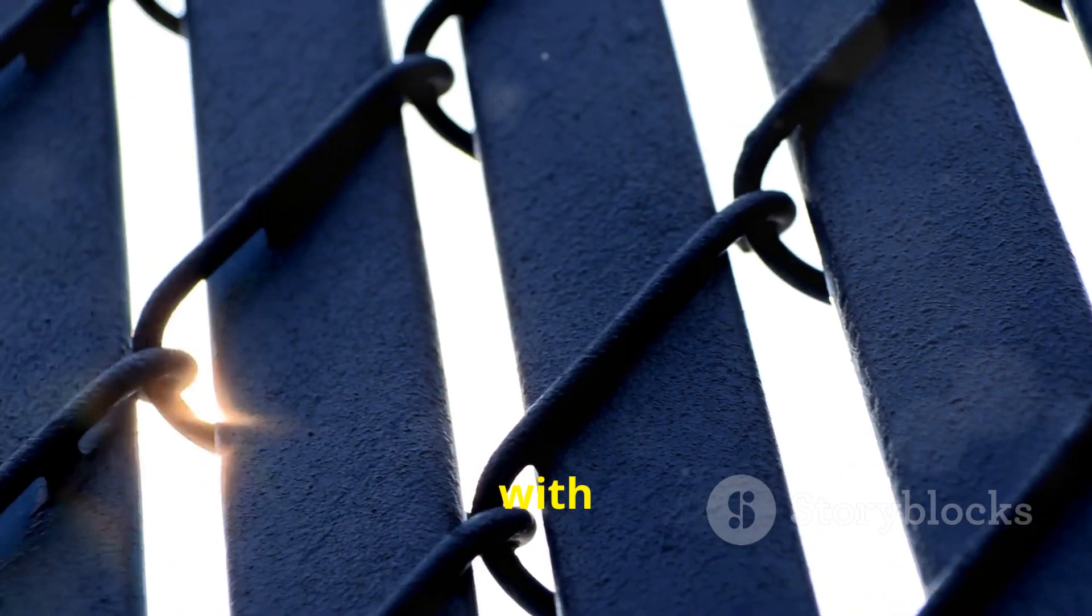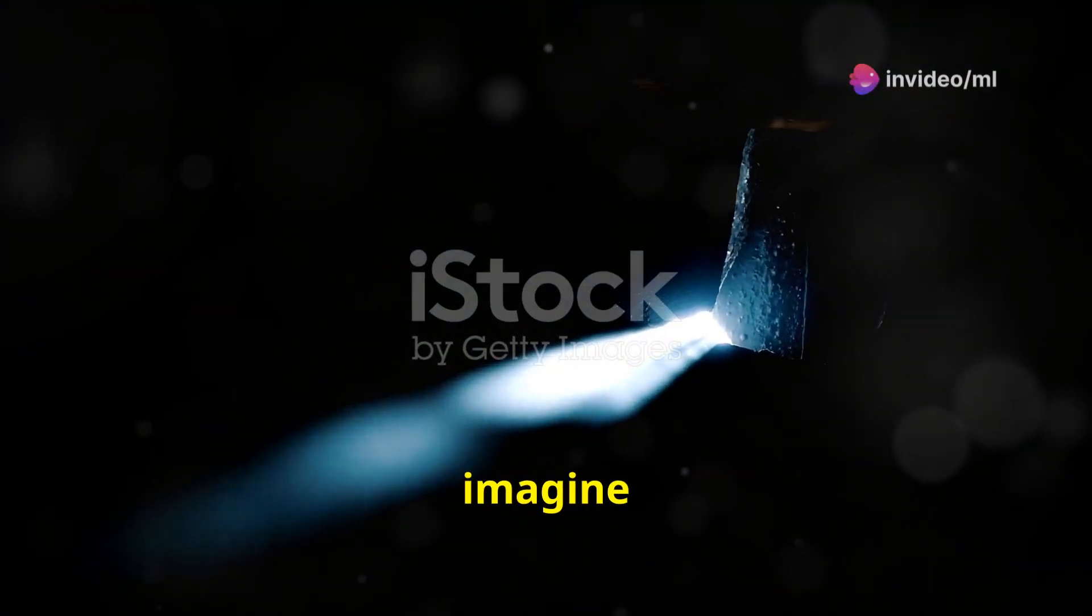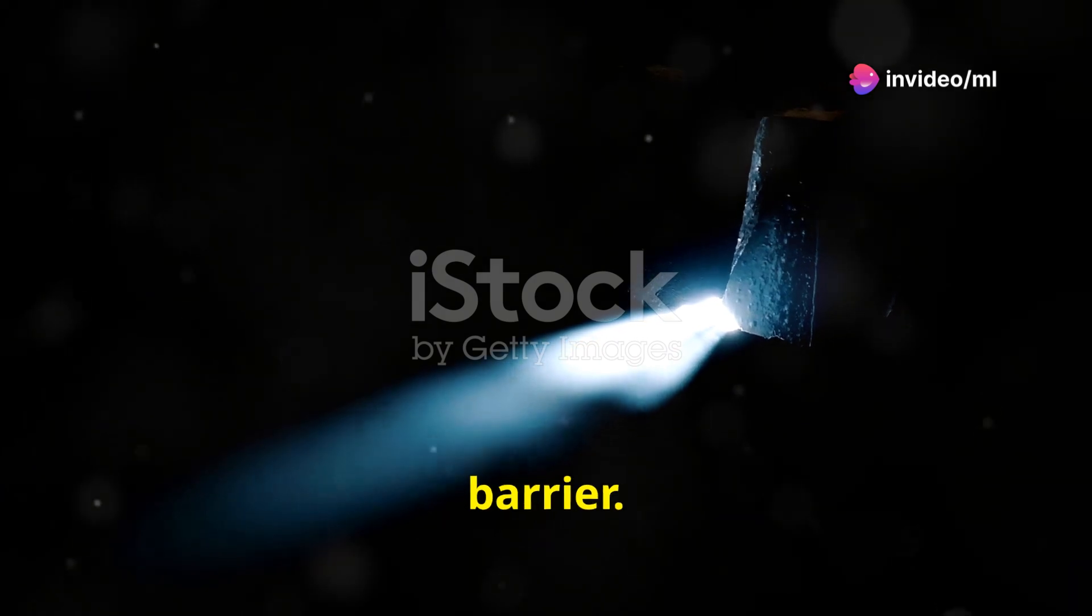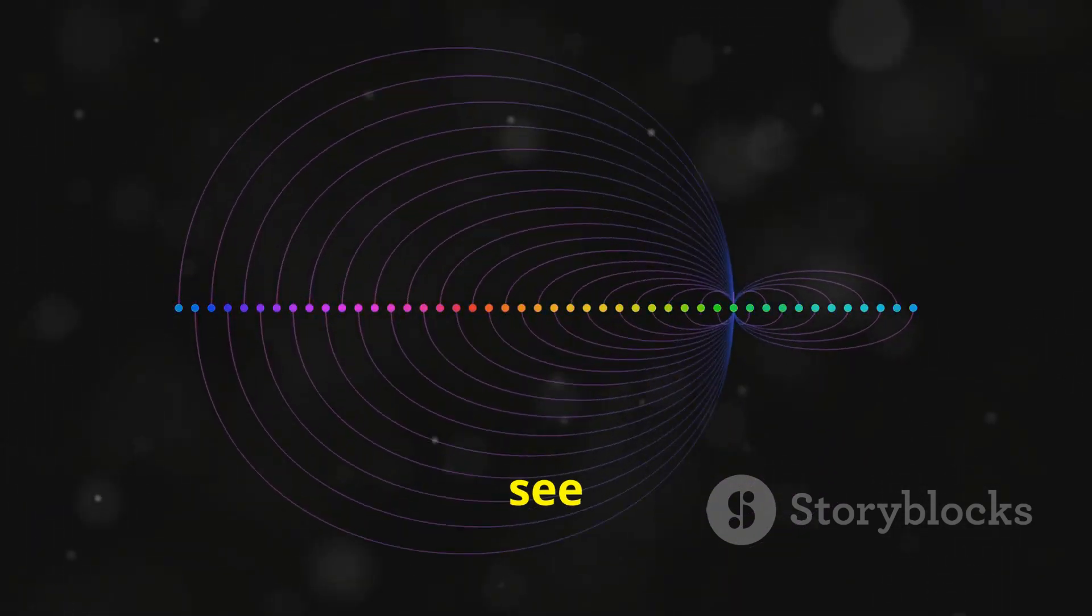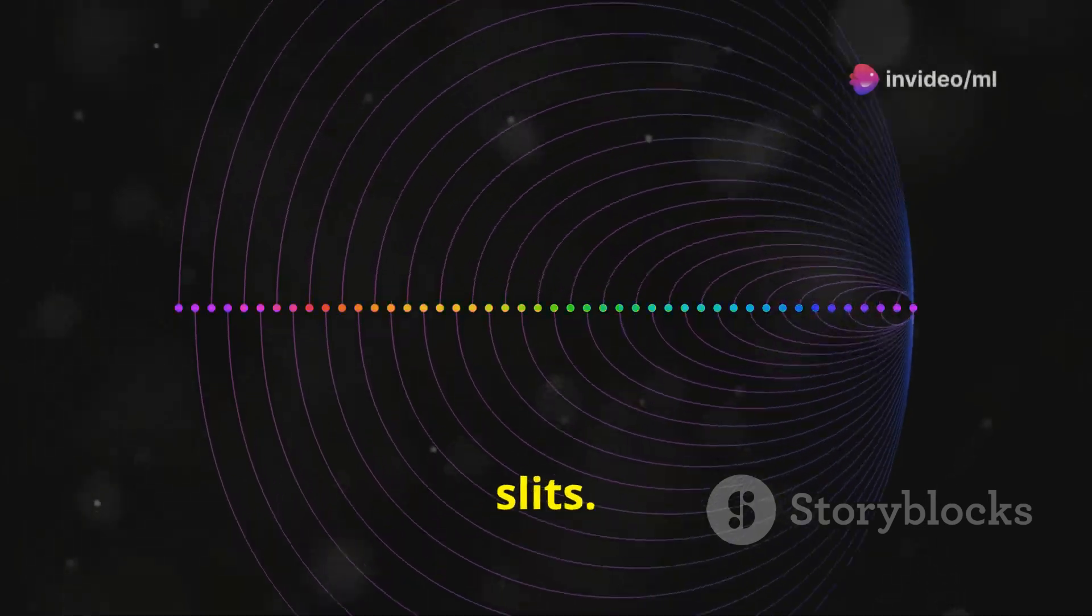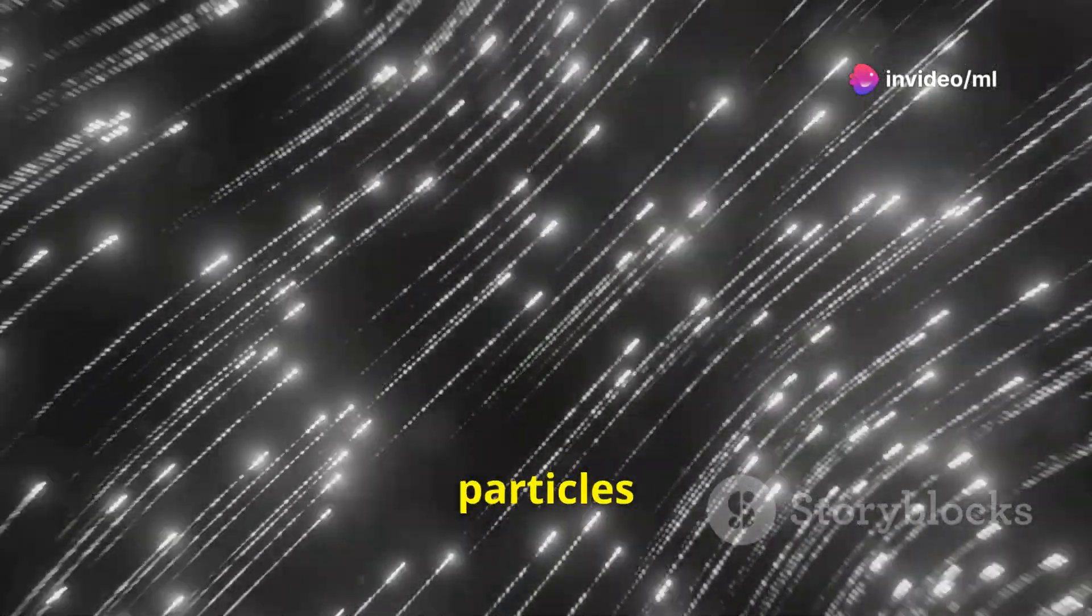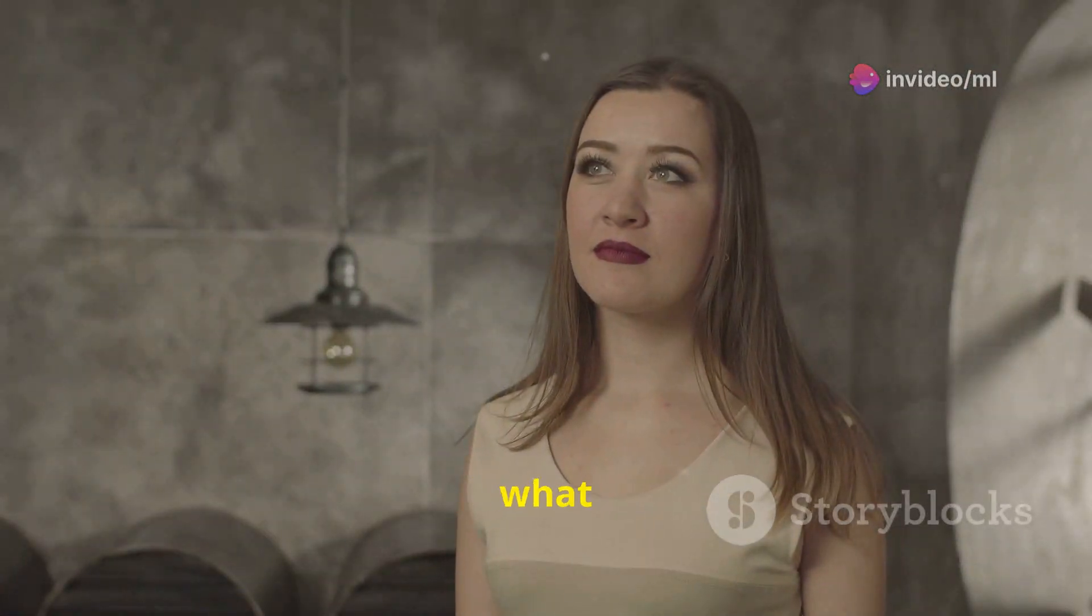Imagine a barrier with two closely spaced slits cut into it. Now, imagine shining a beam of light at this barrier. What would you expect to see on a screen placed behind the barrier? If light were made up of particles, you would expect to see two bright bands on the screen corresponding to the two slits. After all, particles travel in straight lines, right? However, that's not what happens.